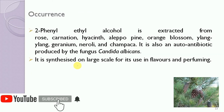The occurrence of 2-phenyl ethyl alcohol: it occurs naturally in extracts and is obtained from rose, carnations, hyacinth, alpallopine, orange blossom, ylang ylang, geranium, neroli and champeca. It also acts as an autoantibiotic and is produced by the fungus Candida albicans. It is synthesized on a large scale for its use in the flavor and perfuming industry.